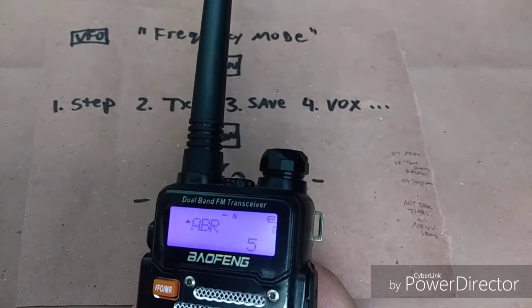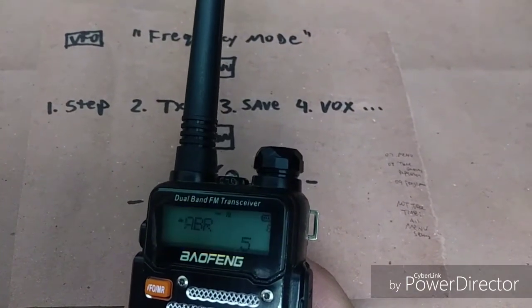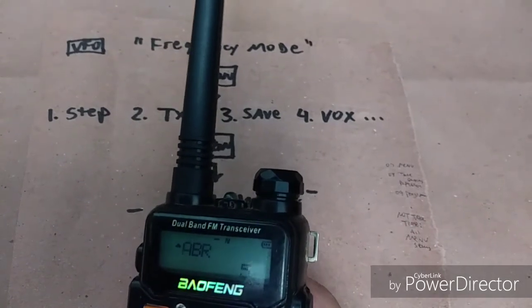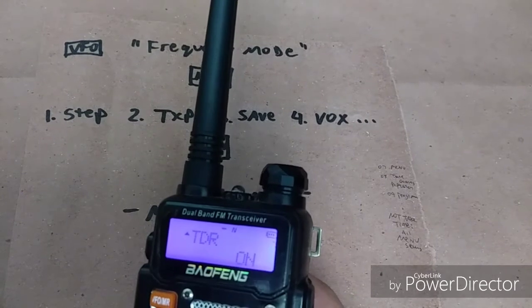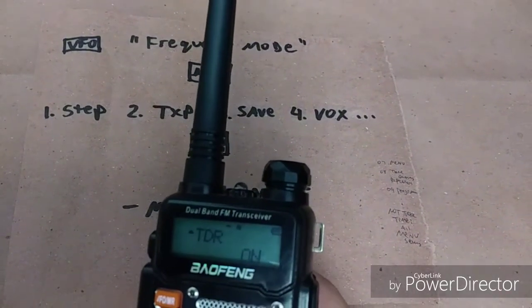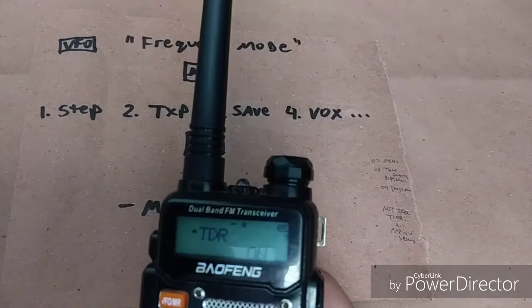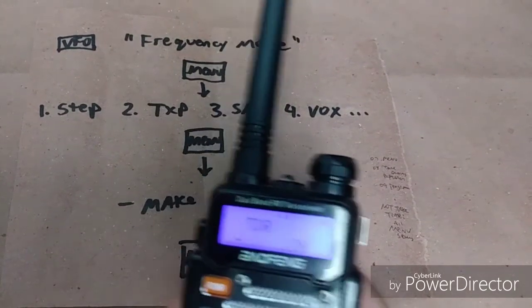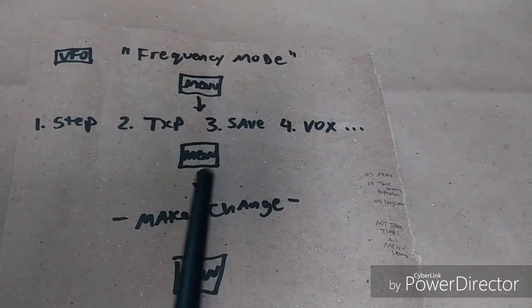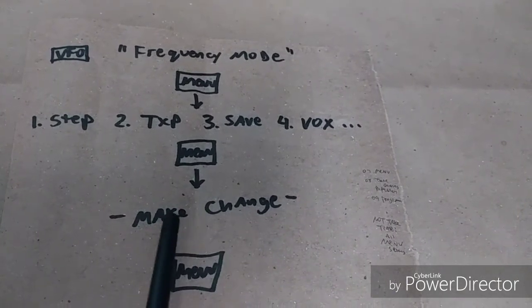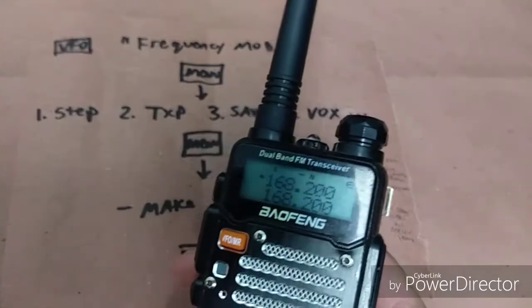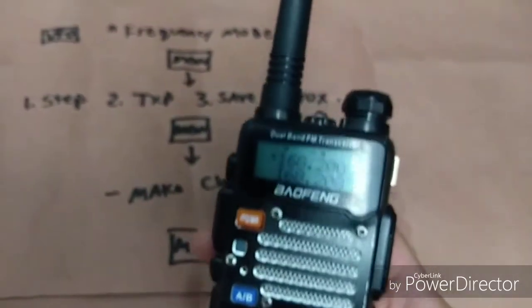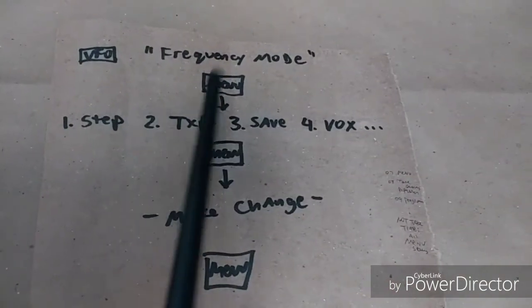Next is ABR — I don't remember what that is but I keep the default setting on five. Then TDR — this is what allows you to listen to two frequencies at one time on A and B. If that's too distracting for you, you can press menu again, which is the second time you press menu, and it drops you into the setting where you can make changes using the arrows. If you take too long it'll time out. So I'm going to press menu once to get into the setting, then menu again to allow me to change settings.